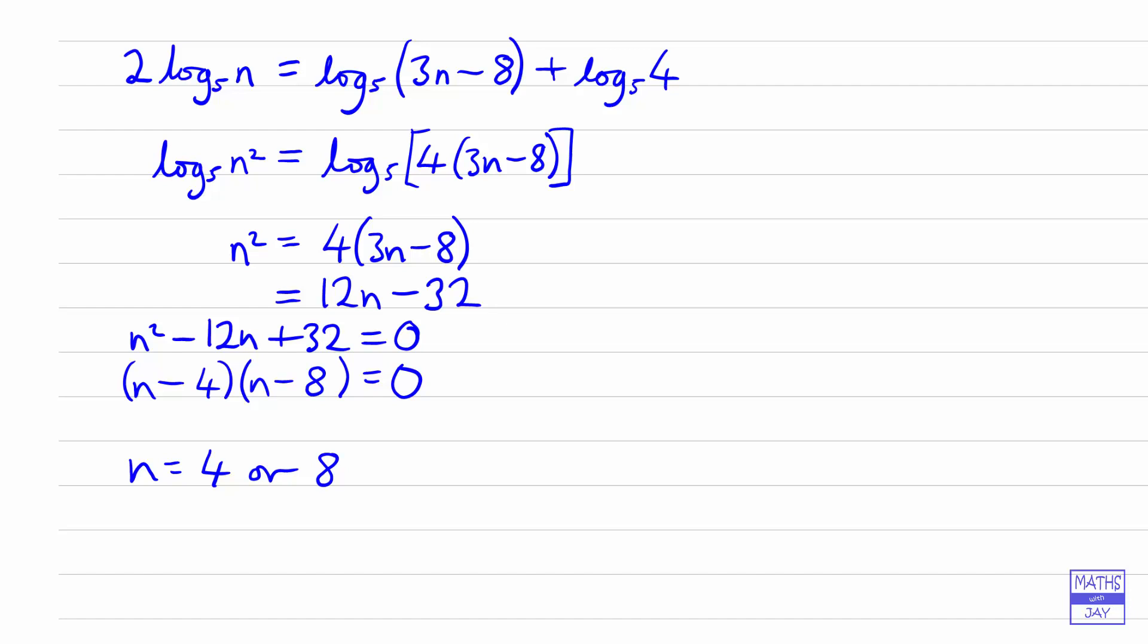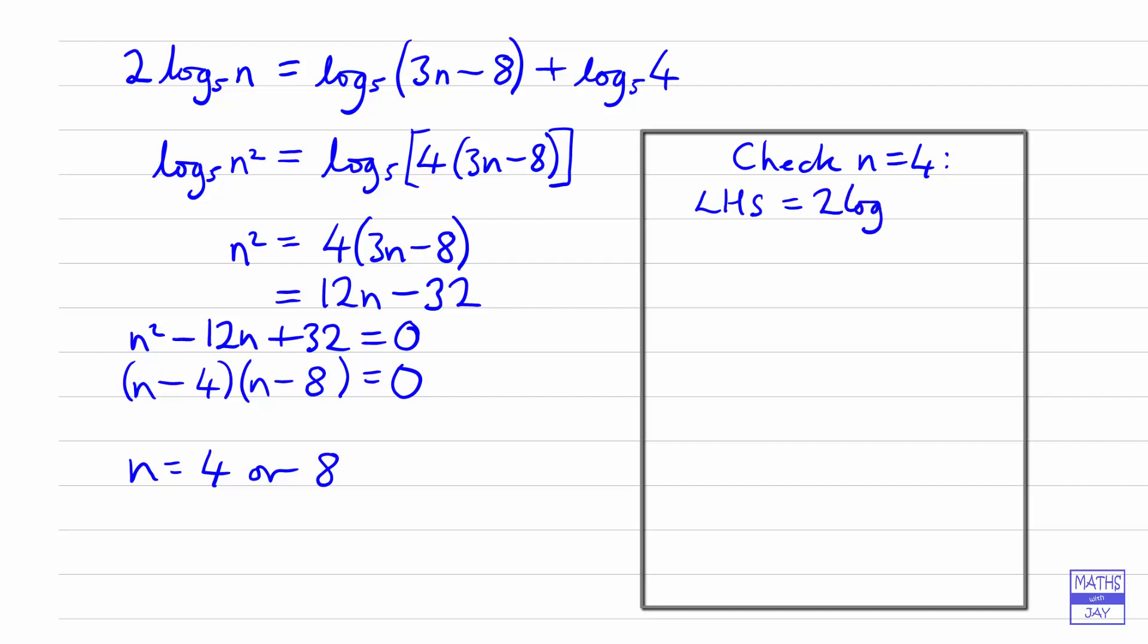So let's now do a quick check, make sure that we've got the correct solutions. So let's check first of all n equals 4. So if we put that into the left hand side of the original equation that will give us 2 log to base 5 of 4.